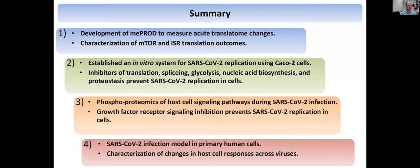So with that already at this point, to summarize: I told you about the development of the MEPROD assay that allowed us to look at acute translatome changes, and we used this to characterize mTOR and the integrated stress response. We established this in vitro system for SARS-CoV-2 replication, and we found that inhibitors of translation, splicing, glycolysis, nucleic acid biosynthesis, and proteostasis all prevented SARS-CoV-2 replication in cells. Then we went on to look at the signaling of infection through phosphoproteomics, and identified growth factor receptor signaling as a key part for viral replication in cells.